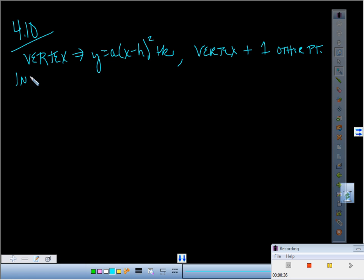You've also learned how to do it in intercept form: Y equals A times X minus T times X minus Q. When do I use that? Two X intercepts plus one other point.